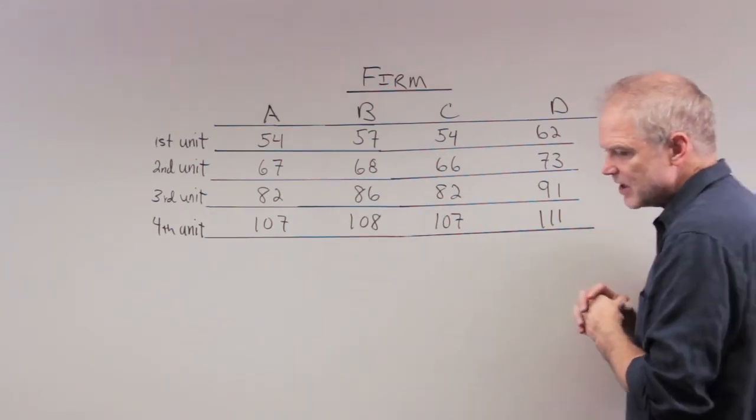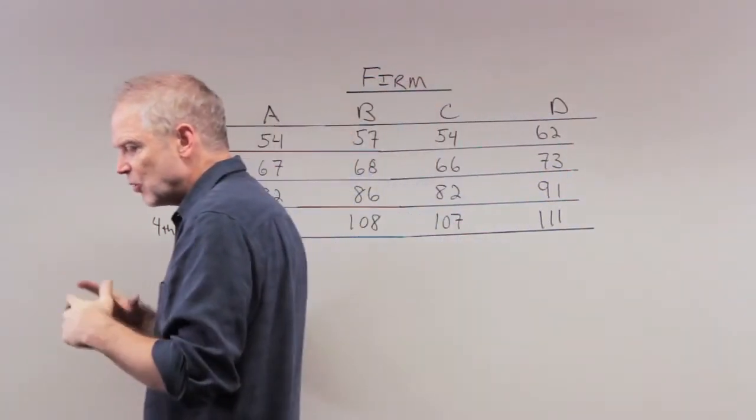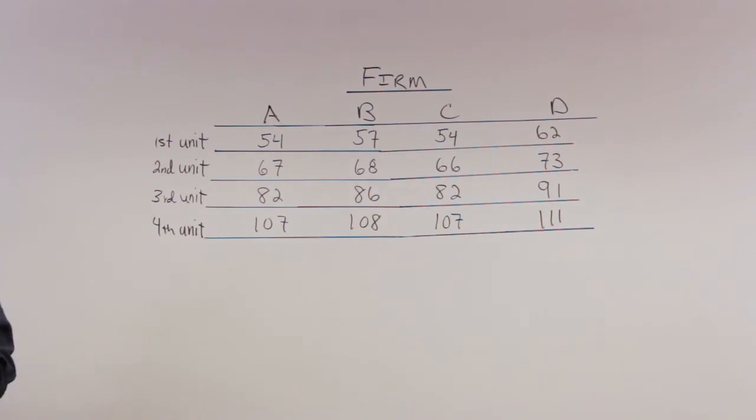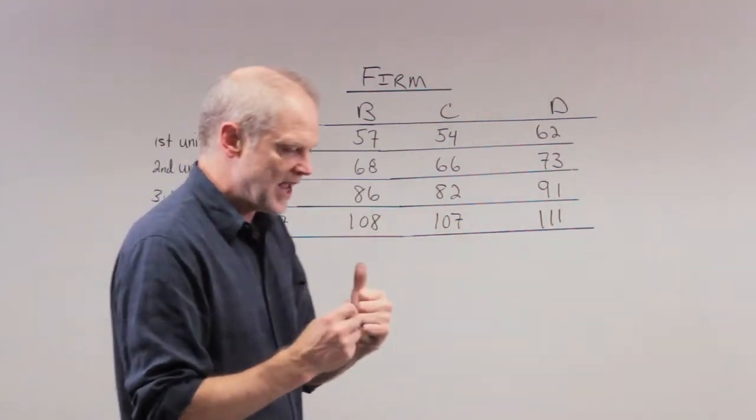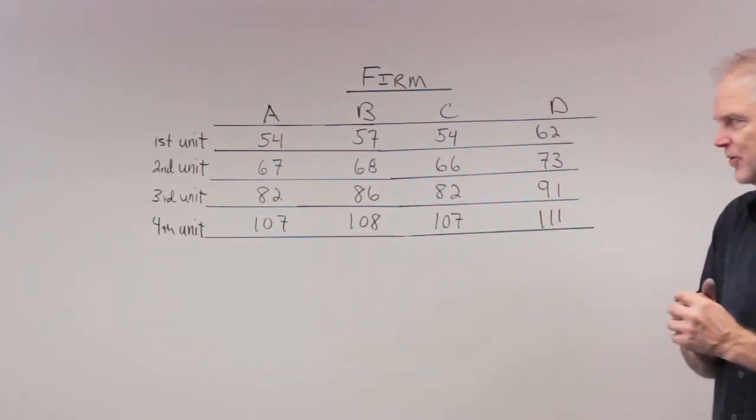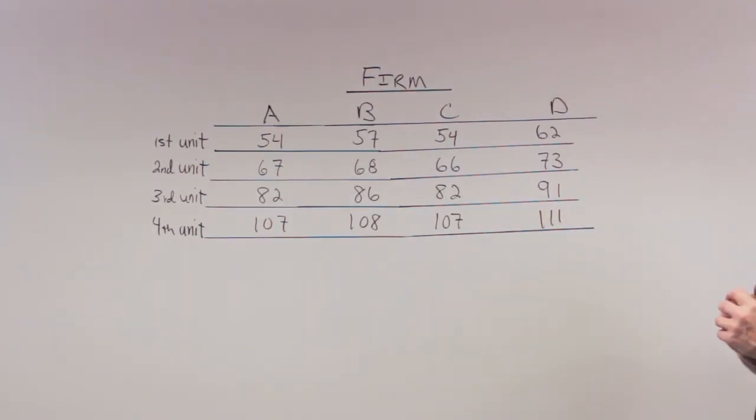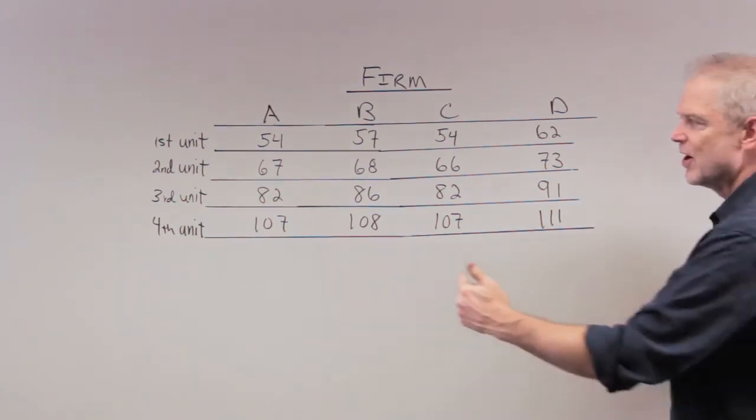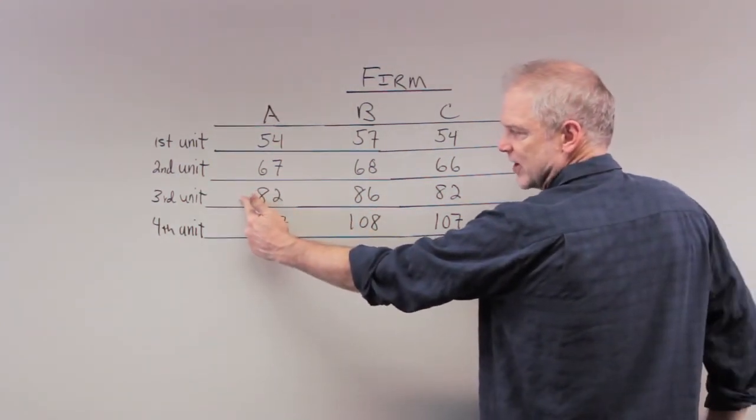So it's a slightly complicated kind of deal, but what you're wanting firms to do is to basically bid away, bid for the right to pollute. Essentially, that's what's going to happen. And they'll keep bidding and bidding and bidding until the price rises to a certain point where it's just below this $82.